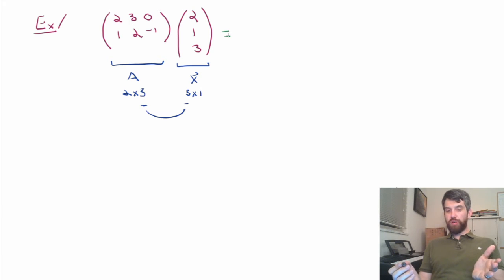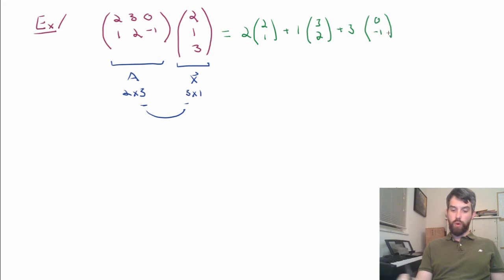If I write it out in terms of a linear combination, the way it works is the first component, that's 2, is multiplied by the first column, that's 2, 1. Then the second component, 1, is multiplied by the second column, that's 3, 2. And then the third component, that's the 3, is multiplied by the third column, 0, minus 1.